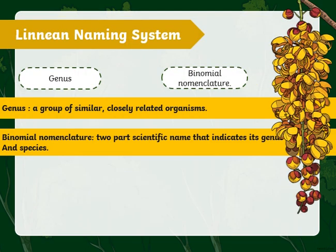We started with the Linnaean naming system. After we classified organisms and went down the taxonomy levels, we decided that we only take the genus name and give them a binomial nomenclature. Genus is a group of similar, closely related organisms, and binomial nomenclature has two parts: the scientific name that indicates its genus and species.